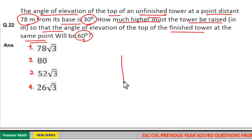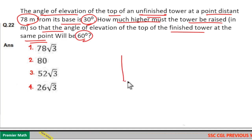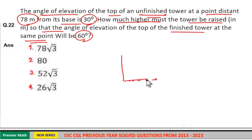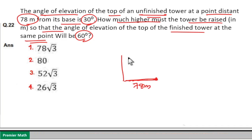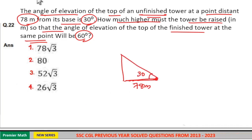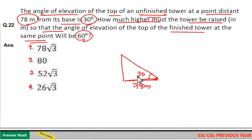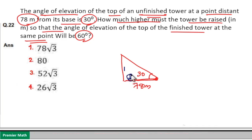This is the unfinished tower, and from a point 78 meters from the base — so this is 78 meters — the angle of elevation is 30 degrees. Then tan 30 equals 1/√3, which means the √3 part is equal to 78 meters.